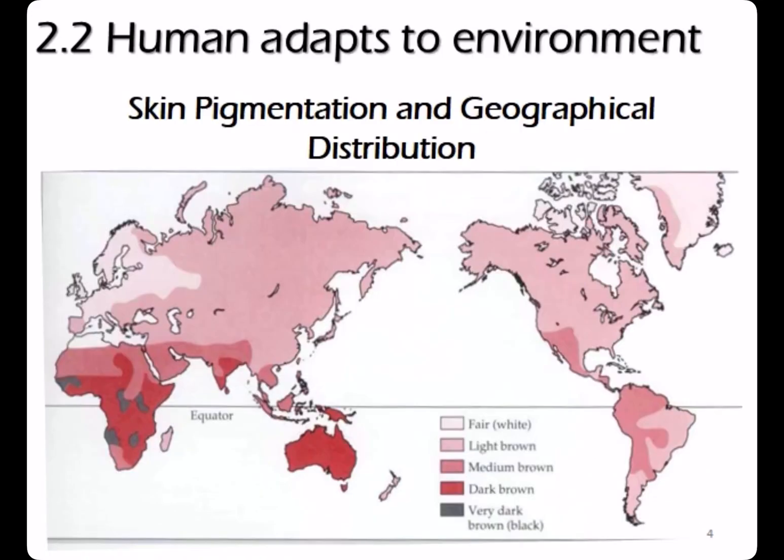Human also adapts to environment. This figure shows skin pigmentation and geographical distribution of the world's population — from fair, lightly brown, medium brown, dark brown, to very dark.